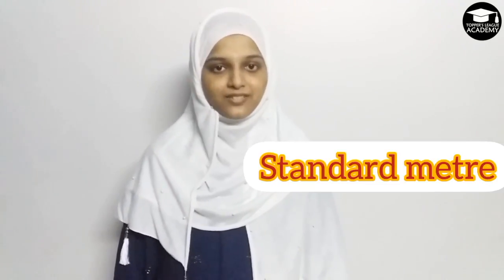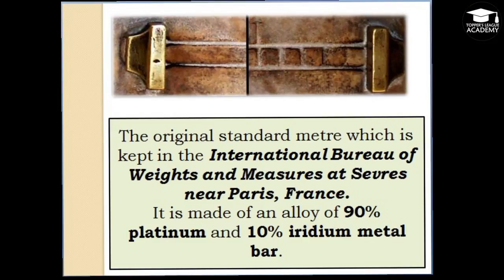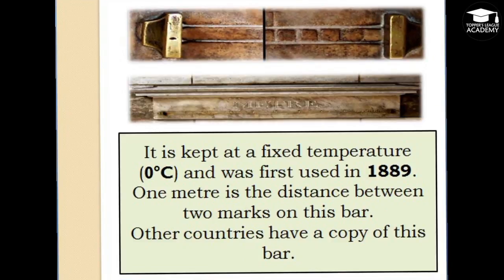Meter is the unit for length used in most countries. To ensure it is the same meter everywhere, we have a special reference called the standard meter. The original standard meter is kept at the International Bureau of Weights and Measures at Sèvres, near Paris, France. It is made of an alloy of 90% platinum and 10% iridium, kept at 0 degrees Celsius, and was first used in 1889. One meter is the distance between two marks on this bar.